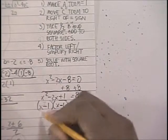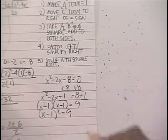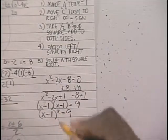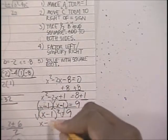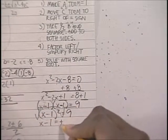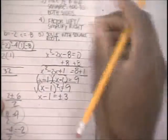x minus 1 times x minus 1 is x minus 1 squared equals 9. You're solving this. You take the square root of both sides. You get x minus 1 equals plus or minus 3.